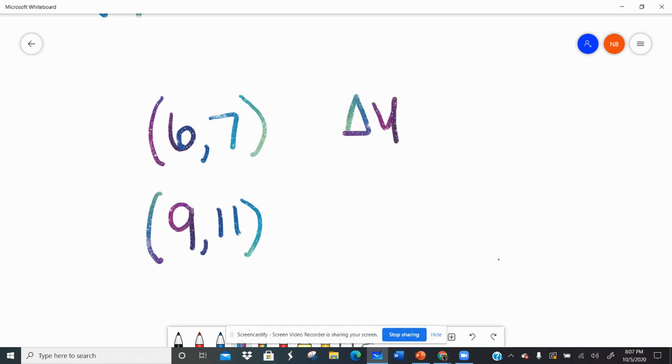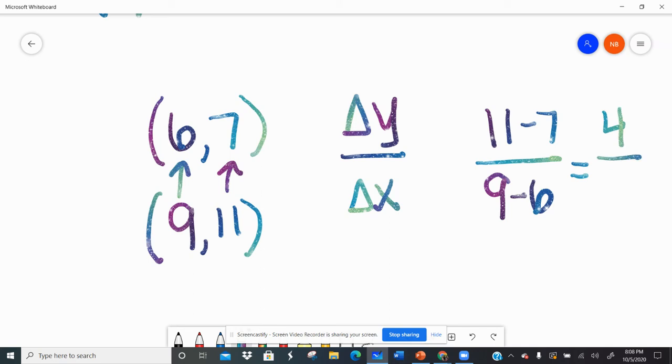Remember, it's always rise. Y is the one that goes up and down. Run, x is the one that goes side to side on the coordinate plane. So again, I'm going to do big minus little: eleven minus seven, and then big minus little, nine minus six. Well, really it started at the nine because I went with the eleven. And so eleven minus seven is four. Sorry, my sound went out. And nine minus six is three.